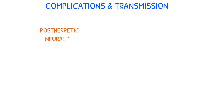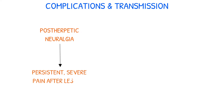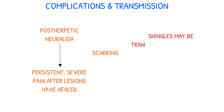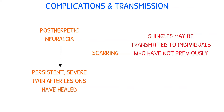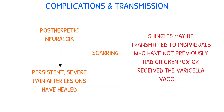One complication of herpes zoster is postherpetic neuralgia, which involves persistent and severe pain even after the lesions have healed. Scarring may also occur. It is important to note that shingles can be transmitted to individuals who have not previously had chickenpox or received the varicella vaccine.